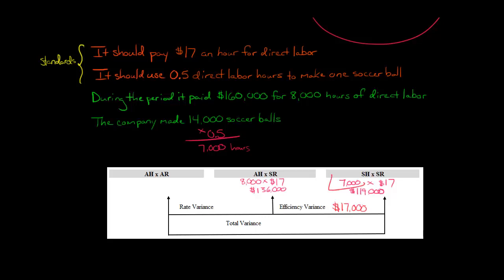It should have taken us 7,000 hours to make all those soccer balls, but in fact, it took us 8,000 hours, an extra 1,000 hours that we went over. 8,000 minus 7,000 is an extra 1,000 hours. So why did it take so many hours of direct labor? Why did it take a lot more?